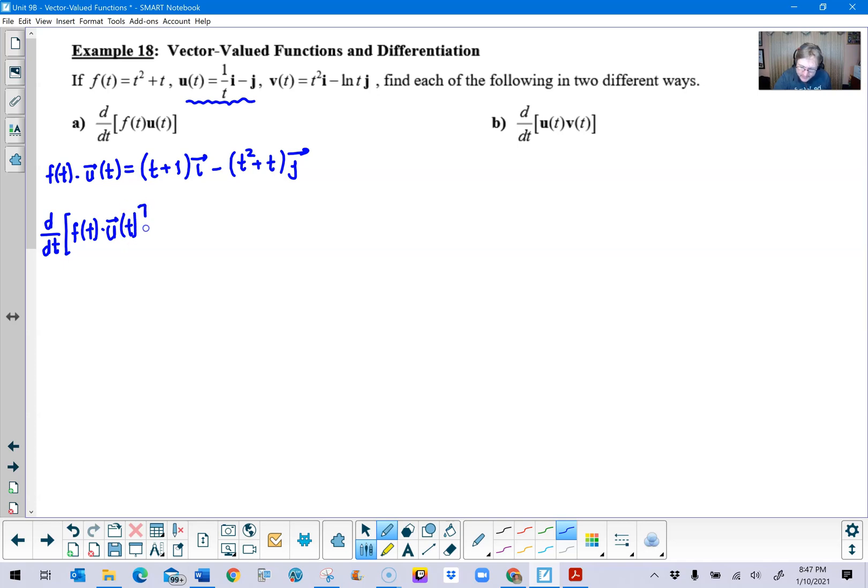Now you could go ahead and take the derivative. How do we take the derivative of a vector value function? Well, as I indicated earlier, you would simply take the derivative of the i part with respect to t. That would give us one and then times i. And then you subtract. And then the same thing here. The derivative of t squared plus t is 2t plus one, multiply that by j. And there you have it.